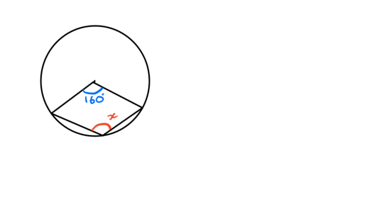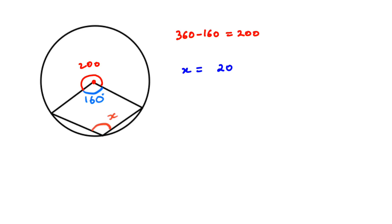One more example — we have to find x. For this question, first we will have to find the angle here, and angle at a point equals 360. So to find this angle we have to subtract 160 from 360, and that will give us 200. Then 200 divided by 2 is 100 degrees.